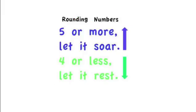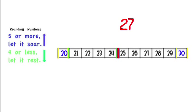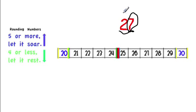A little rule to remember when rounding: 'Five or more, let it soar. Four or less, let it rest.' When looking at number 27, if I'm rounding to the nearest 10, I underline the 10s spot and circle the 1s spot. I look at the 7 and ask: is it 5 or more? Yes — let it soar. So I go back to the 10s, change the 2, and add one more, making it a 3. This becomes a 0, so my new number is 30.